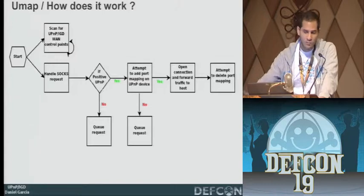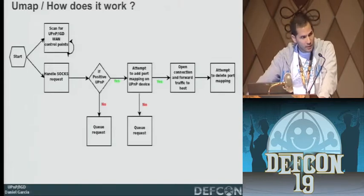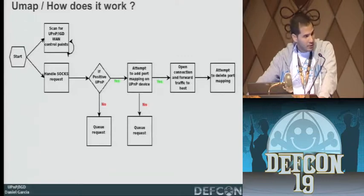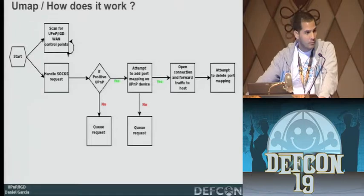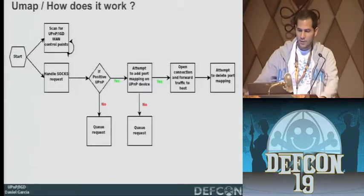Deleting the port mapping is very important because UPnP does not allow an infinite amount of port mappings. Some devices allow as little as 10 port mappings at a time. So if we did a port mapping for every connection without deleting, we wouldn't have a very good connection.